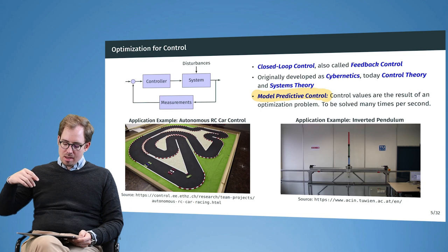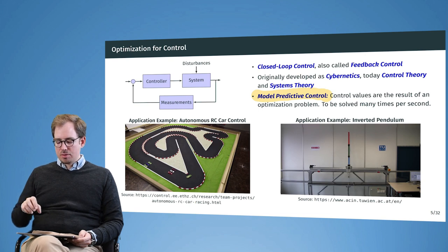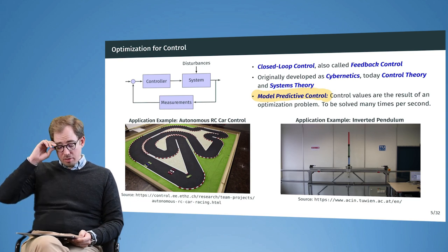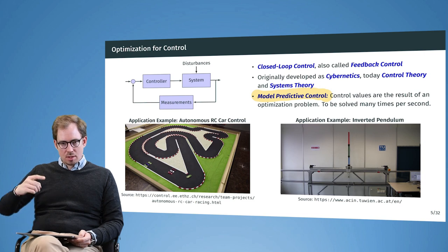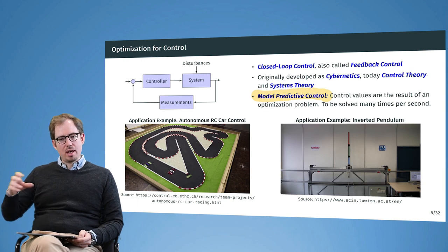For this, the computer many times per second is solving an optimization problem to compute its best movements. It is executing the first steps and then receiving additional input. There are of course external random inputs that are perturbing the actual behavior.